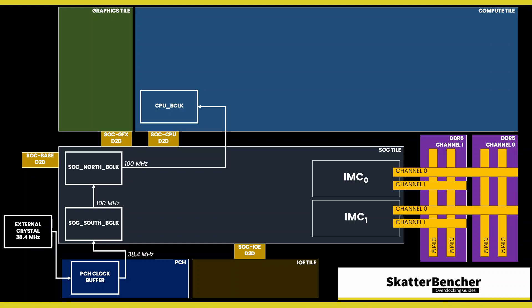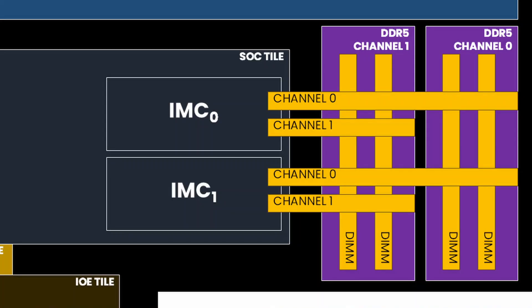Arrow Lake has two DDR5 memory controllers, which are located on the SOC tile, which it shares with a lot of other IP blocks. The memory controller topology is slightly different on Arrow Lake than on previous DDR5 platforms, as each memory controller connects to one side of the system memory DIMMs.